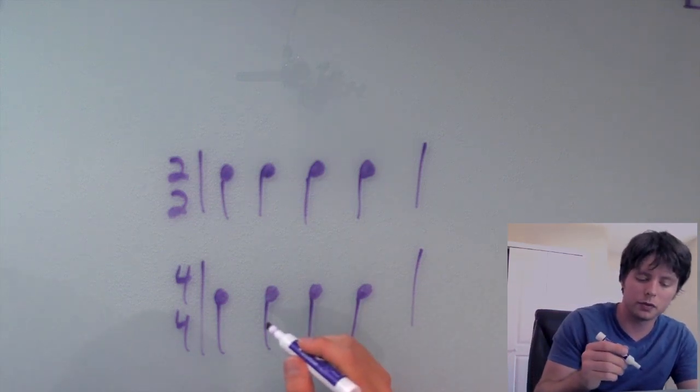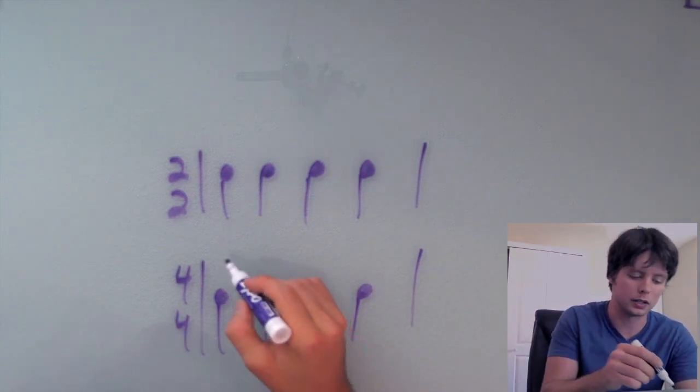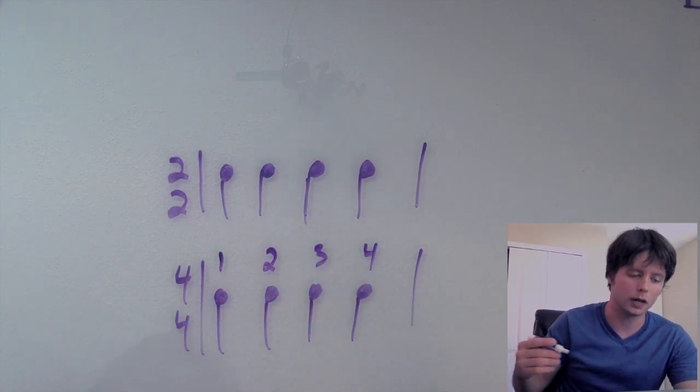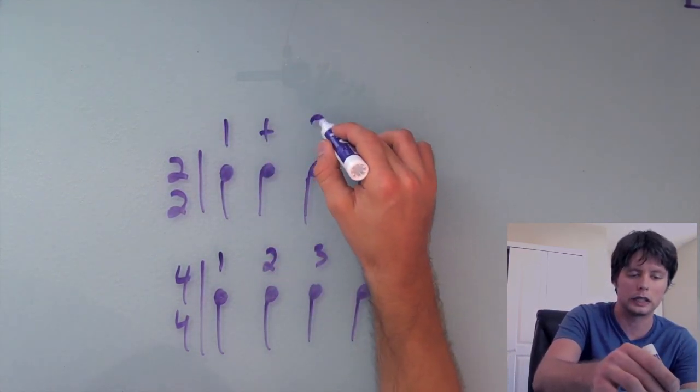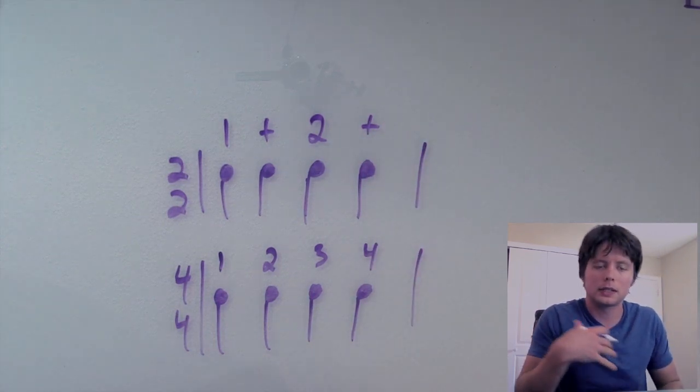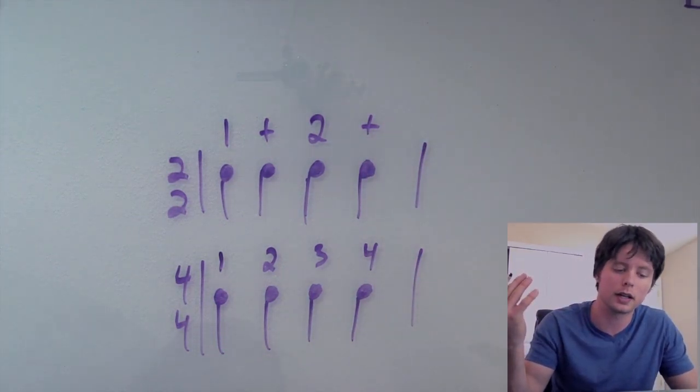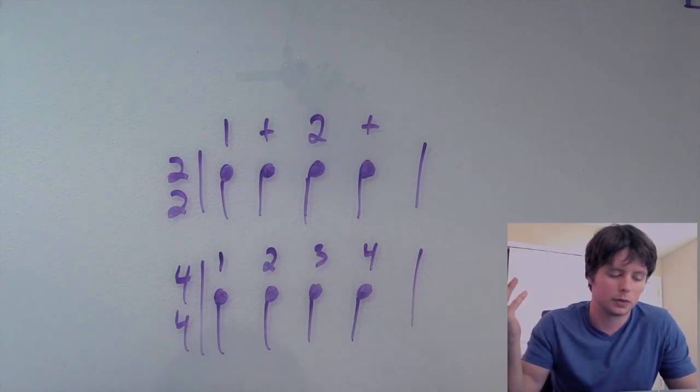Well, I told you you'd count out 4-4 as having four beats. You count it as 1, 2, 3, 4. And you want to count out 2-2 as having two beats. So you count it as 1 and 2 and. But still, what's the difference? You're not going to actually count out loud when you're playing this. So, you know, what does it matter?